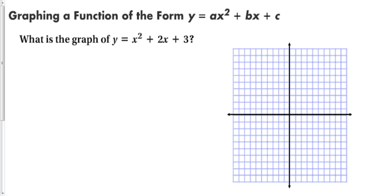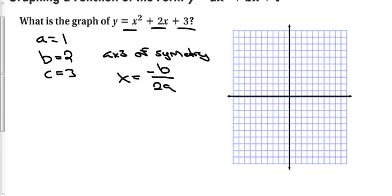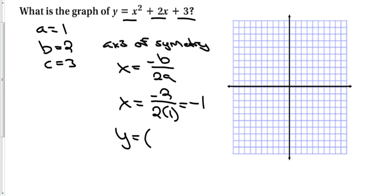Let's graph the function. First, identify a, b, and c: a = 1, b = 2, c = 3. Next, the axis of symmetry is x = -b/(2a), which is also the x-coordinate of the vertex. Plugging in: x = -2/(2·1) = -2/2 = -1. Now find the y-coordinate: y = (-1)² + 2(-1) + 3 = 1 - 2 + 3 = 2. So the vertex is at (-1, 2).